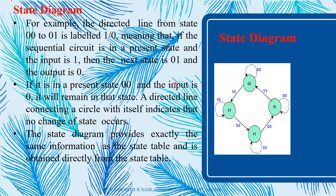Now let's look at an example of a state diagram. Here there are four states: 00, 01, 10, 11. From state 00, there are two transitions. When the present state is 00 and input is 1, the next state is 01 and the output is 0. When the present state is 00 and input is 0, the next state remains 00 and output is 0.